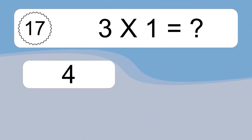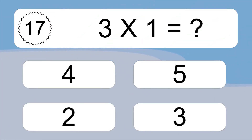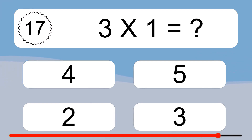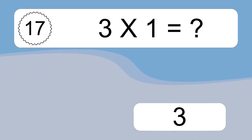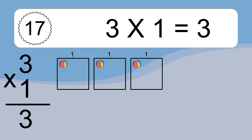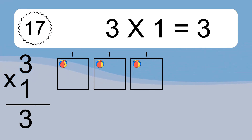Three times one equals what? Three times one equals three. We have three boxes and each box has one colorful ball inside. If you count all the balls in all the boxes together, you will have three times one balls. This equals three balls.